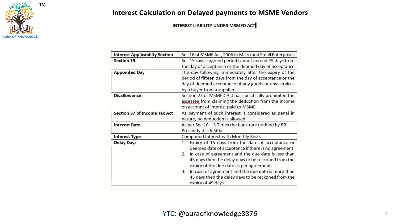Section 16 also specifies the rate at which interest has to be paid. The interest rate is 3 times the bank rate as notified by the Reserve Bank of India. Presently the notified rate is 6.5%, so 3 times that is 19.5% per annum.